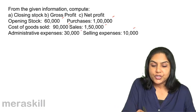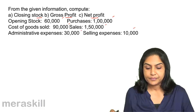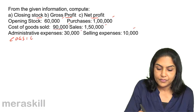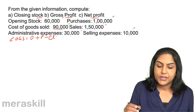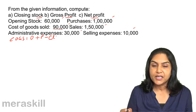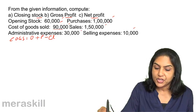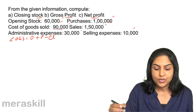We need to compute closing stock, gross profit, and net profit. Cost of goods sold is opening stock plus purchases minus closing stock. Opening stock is given, purchases is given, and cost of goods sold is given, so it should be easy to compute the closing stock.